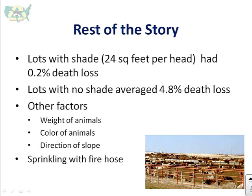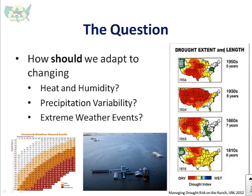Lots with shade had a 2.2% death loss. Lots with no shade averaged 4.8% death loss, with other factors being the weight of the animals, the color of the animals, direction, and slope. So some simple things resulted in dramatic results in this particular heat wave. Also noted in the article, sprinkling with a fire hose had a significant impact. So the question is: how should we adapt to a changing climate?